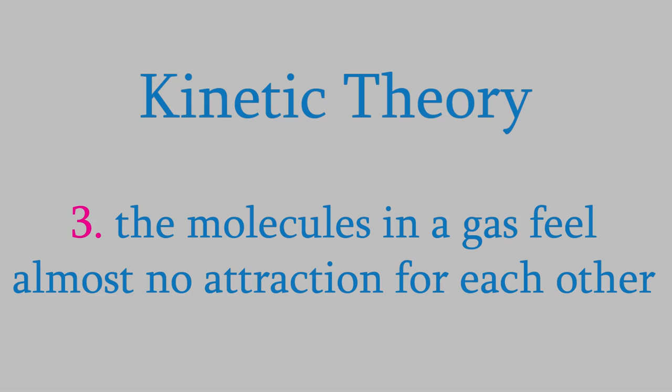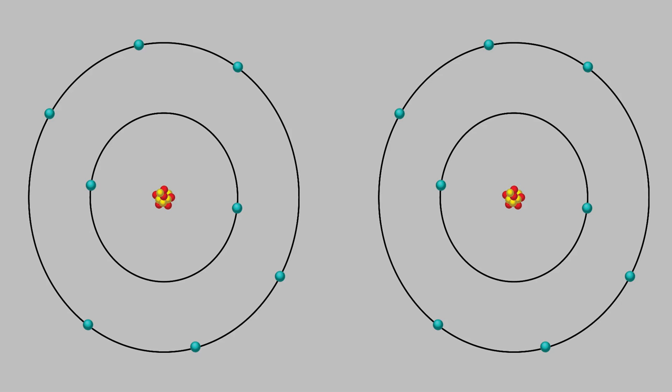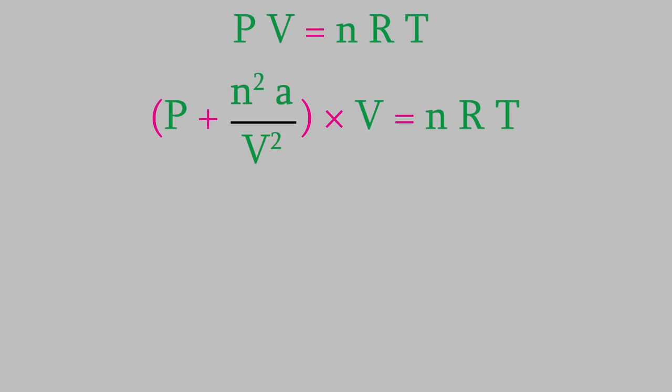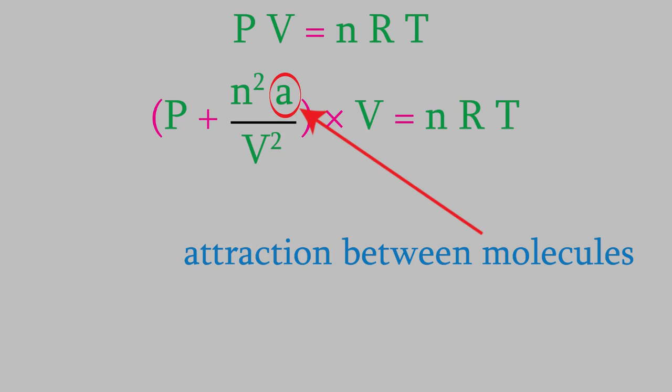The other assumption the kinetic theory makes is that the molecules don't attract or repel each other. This also isn't true. We know that all molecules contain protons and electrons, so the electrons in one molecule will repel the electrons in other molecules and attract protons in other molecules. Because the molecules stick to each other when they're attracted, they collide with the walls of the container with more force. That means the pressure will be higher than expected. So to make the ideal gas law more accurate, we shouldn't just use P. Instead, we make a correction to the pressure, which is n squared times a over V squared. There's a bit of physics involved in coming up with that correction, and we won't be going into that math. The important thing to know is that a is a number that tells us how much the molecules in a gas are attracted to each other.